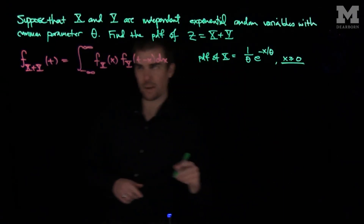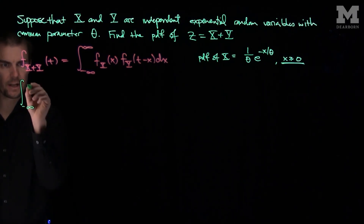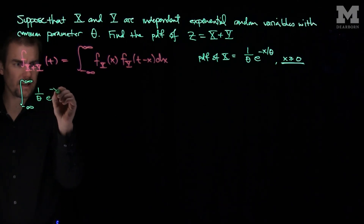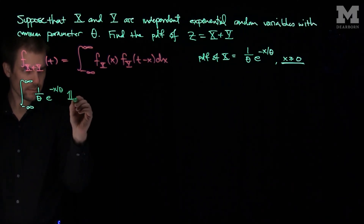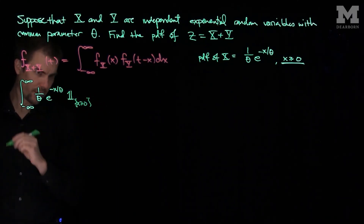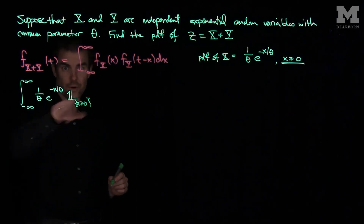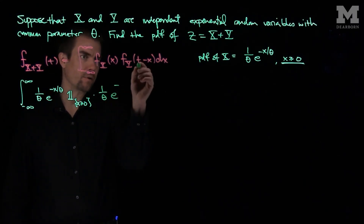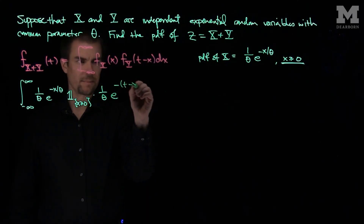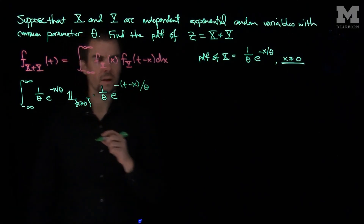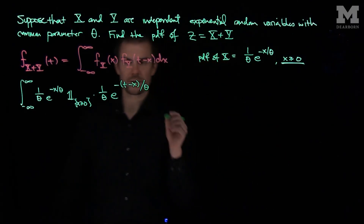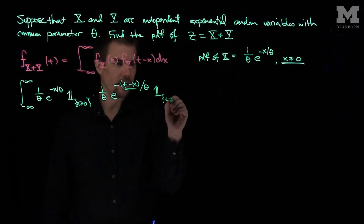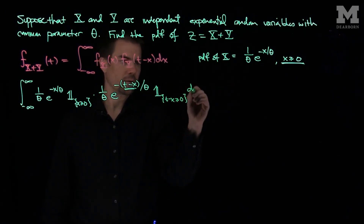The condition x ≥ 0 is important because there's a restriction on the range of x. So we set up the integral from negative infinity to infinity of fx(x) = (1/θ) e^(−x/θ) times the indicator function that x ≥ 0, times (1/θ) e^(−(t−x)/θ) times the indicator function that t minus x is greater than or equal to 0, dx.